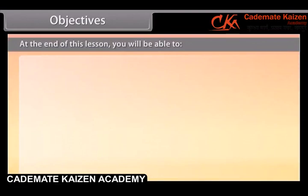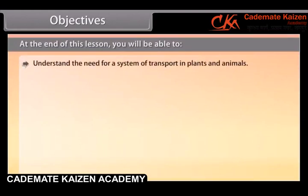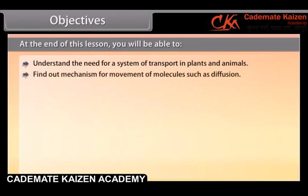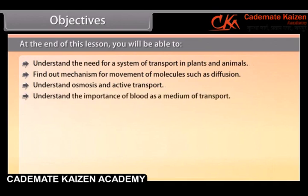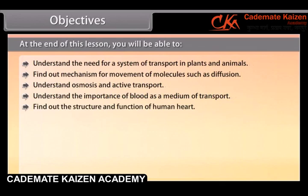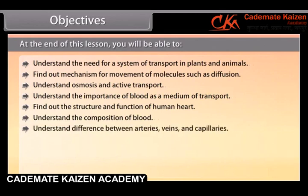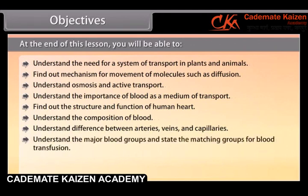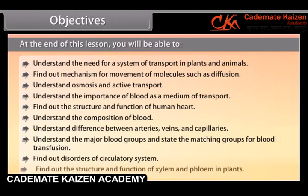At the end of this lesson you will be able to understand the need for a system of transport in plants and animals. Find out mechanism for movement of molecules such as diffusion. Understand osmosis and active transport. Understand the importance of blood as a medium of transport and find out the structure and function of the human heart. Understand the composition of blood. Understand the difference between arteries, veins and capillaries. Understand the major blood groups and state the matching groups for blood transfusion. Find out disorders of circulatory system. And find out the structure and function of xylem and phloem in plants.